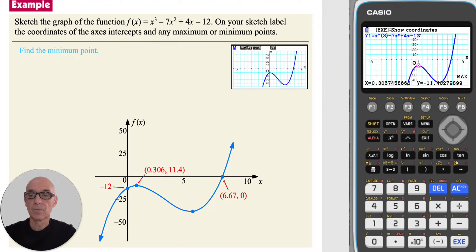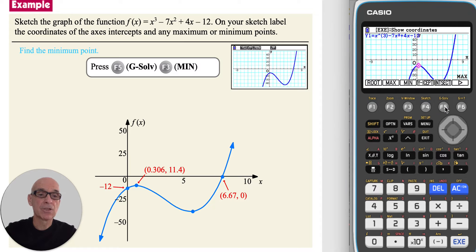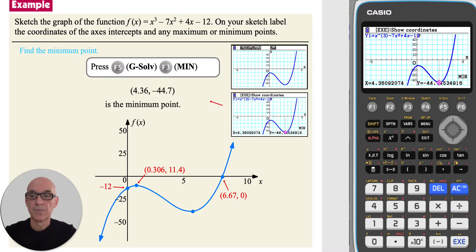Lastly, to find the coordinates of the minimum point, press f5, g solve, and then f3, minimum. Given the coordinates shown, and again adding them to the sketch.